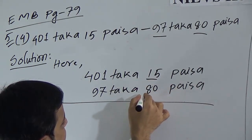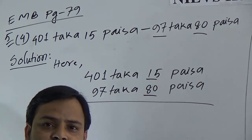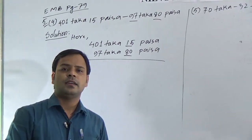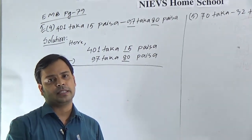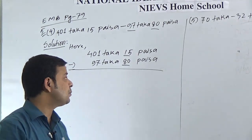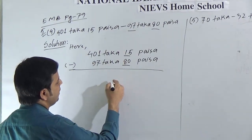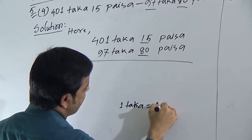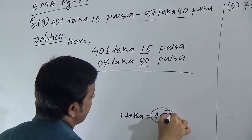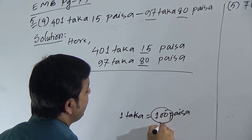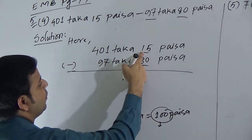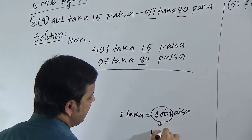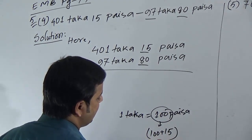Students, observe here: we have 15 paisa and we need to subtract 80 paisa. Is it possible to subtract 80 paisa from 15 paisa? No, 15 is smaller than 80. If we want to subtract, we have to take 1 taka as loan. 1 taka means 100 paisa. So if we take 1 taka with 15 paisa, we get 100 plus 15, which is 115 paisa.